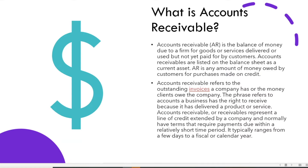Accounts Receivable are listed on the balance sheet as a current asset. Accounts Receivable is any money owed by customers for purchases made on credit. AR refers to the outstanding invoices a company has, or the money clients owe to the company. The phrase refers to accounts a business has the right to receive because it has already delivered the product or service. Accounts Receivable represent a line of credit extended by a company and normally have terms that require payment due within a relatively short period of time.